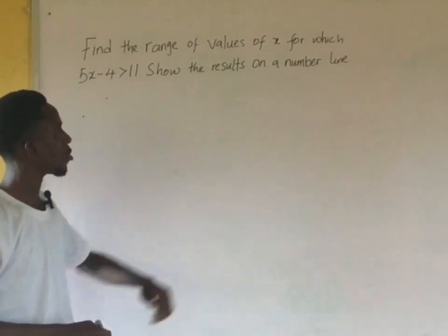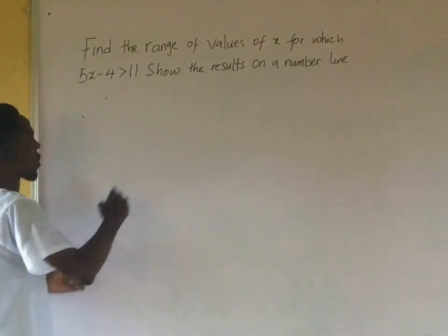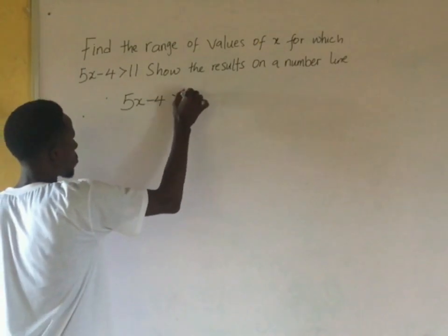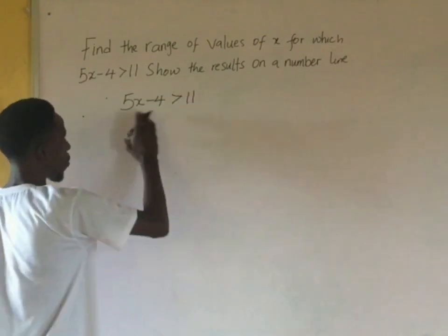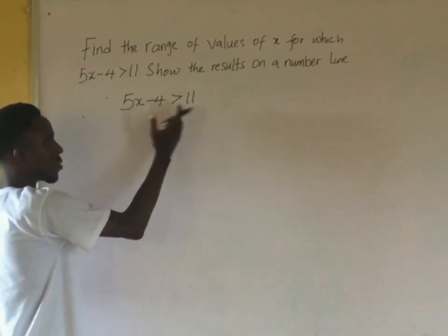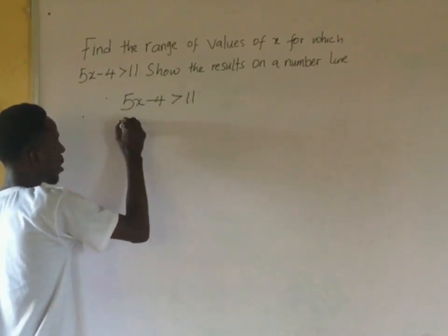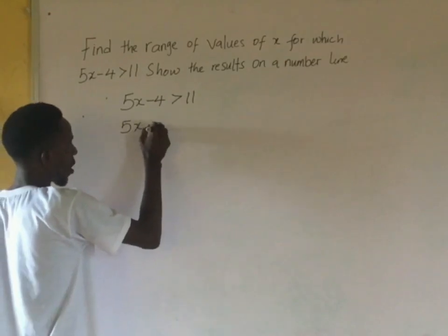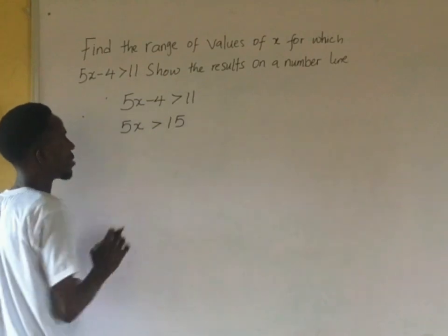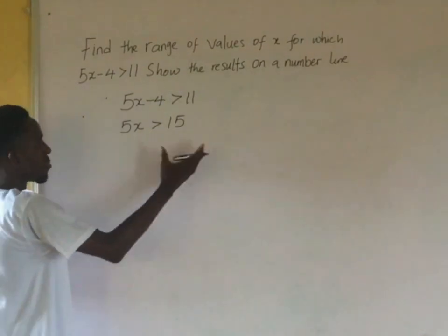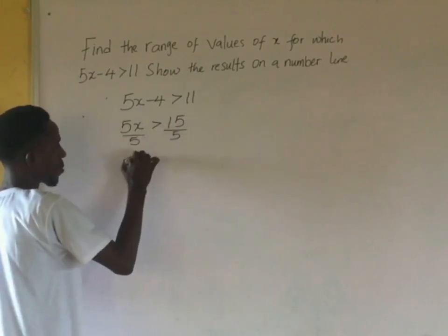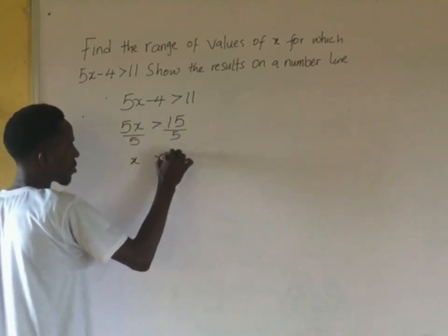I'm going to start by solving the inequality. 5x minus 4 is greater than 11, so I'm going to add 4 to both sides. If I add 4 to both sides, I'm going to have 5x is greater than 15. The next thing I'm going to do is divide both sides by 5, so if I divide this by 5, I'm going to have x is greater than 3.